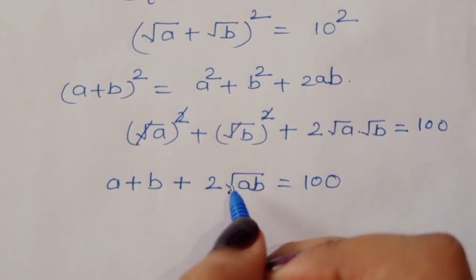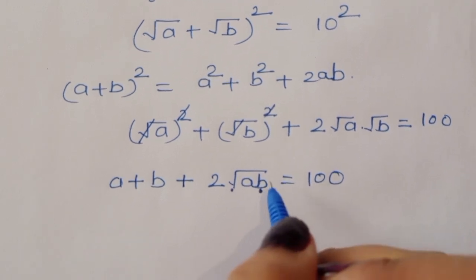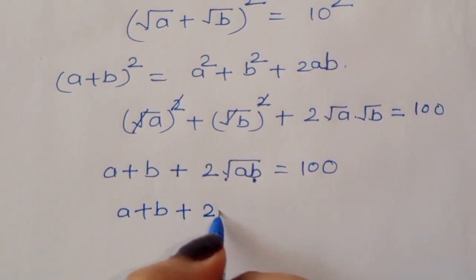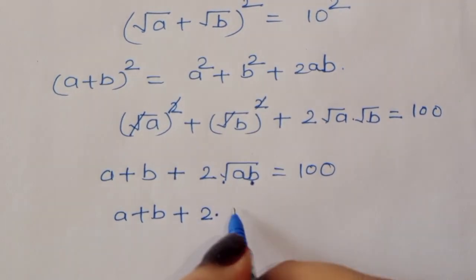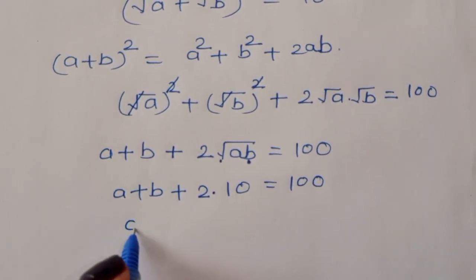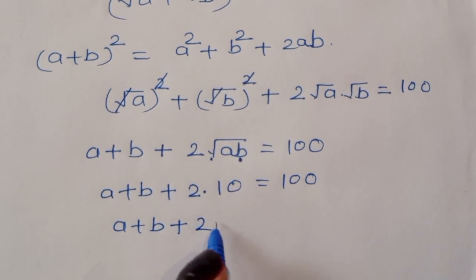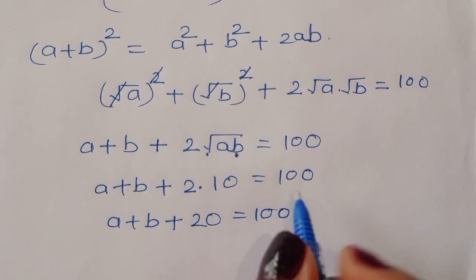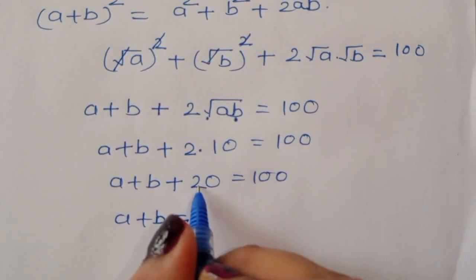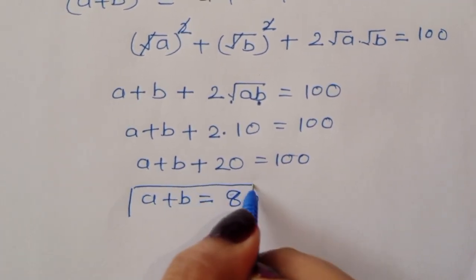From equation 2, √(ab) = 10, so we substitute: a + b + 2(10) = 100, which gives a + b + 20 = 100. Therefore a + b = 100 − 20 = 80. This is equation number 3.